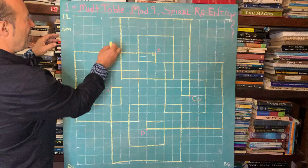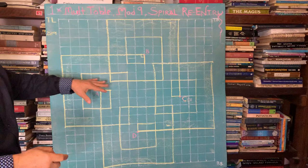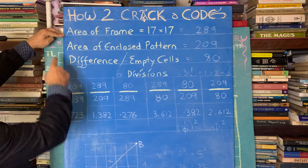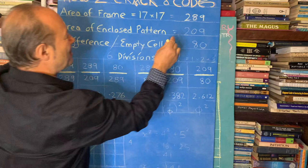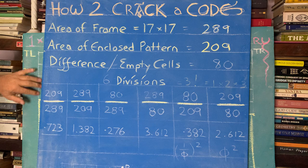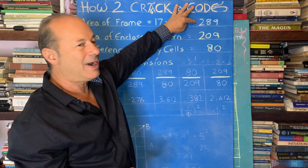So what I'm going to do is analyze. If I was to shade in all of this area here, the boundary, if I was to add up all this shaded bit here, add it all up. When we want to crack a code, we need to know that the sum of the whole frame was 289. That was 17 by 17 on my graph paper. The area of the pattern that I just shaded in is 209. But the difference between the pattern and what's left over in the corners, the empty cells, they were 80.